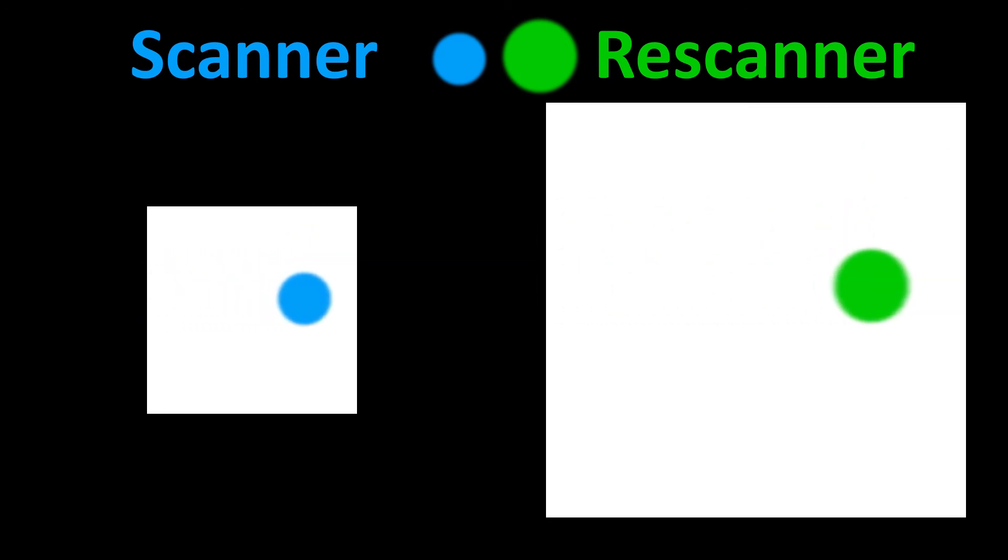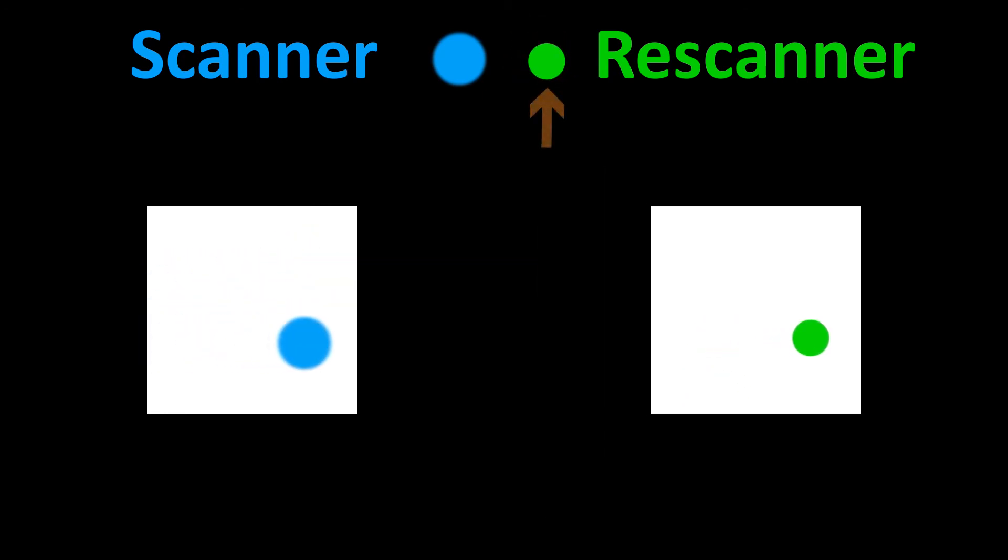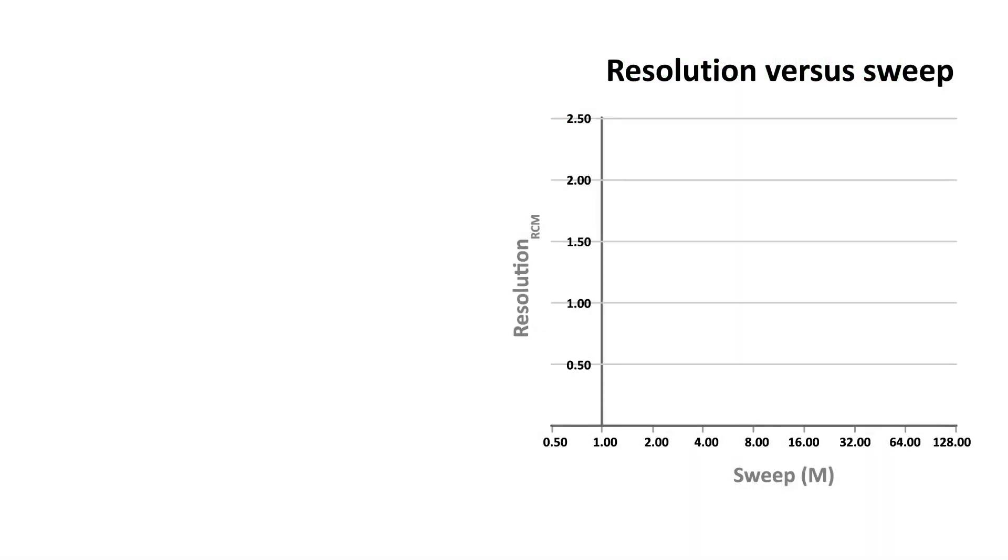This effect becomes clear when we re-scale the image to its standard size. Now we understand why the double sweep of the re-scanner in RCM gives an improved resolution of 170 nm. We also analyzed larger sweeps and found that the double sweep improves the resolution best. This formula describes the relation between the length of the sweep and the image resolution. It clearly shows that the sweep larger than double does not improve the resolution.